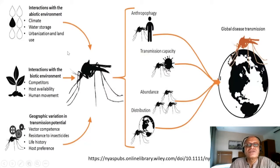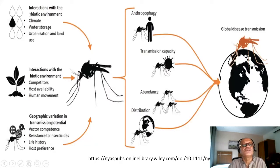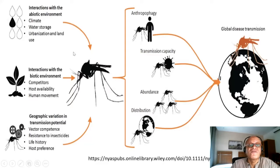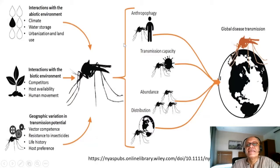Here is a way to think about this complex interaction of climate and vectors. Global disease transmission is the outcome of concern. Interactions with the abiotic environment — climate, water storage, urbanization, and land use — are very important for mosquito populations. Interactions with the biotic environment include competitors, host availability, and human movement. Geographic variation in transmission potential, vector competence (how capable the vector is of moving the pathogen), resistance to insecticides, life history, and host preference all feed into transmission capacity, abundance, and distribution, which together determine global disease transmission. Almost all of these factors are affected by weather and climate.